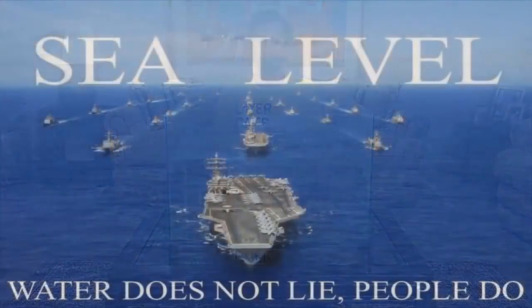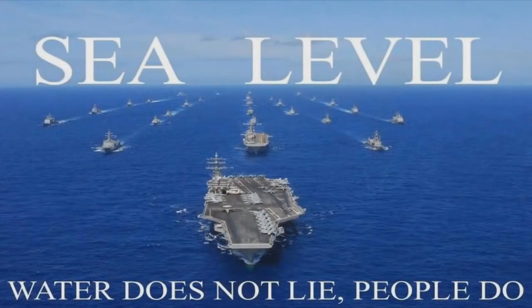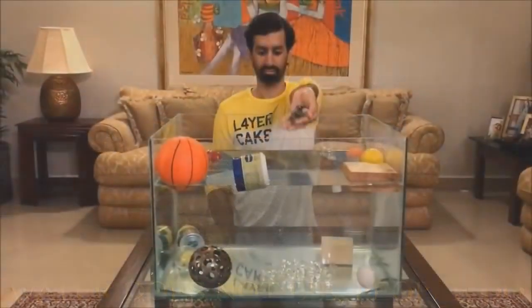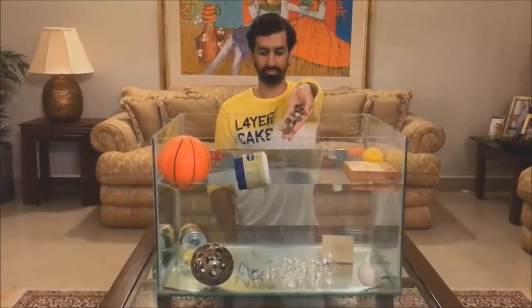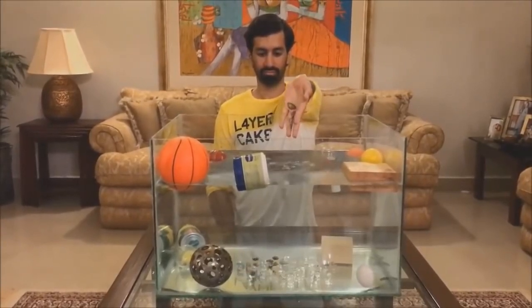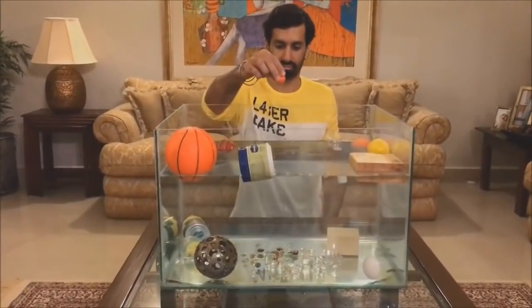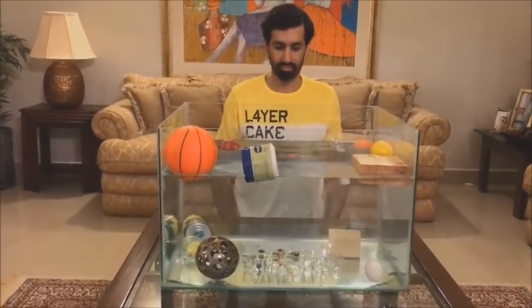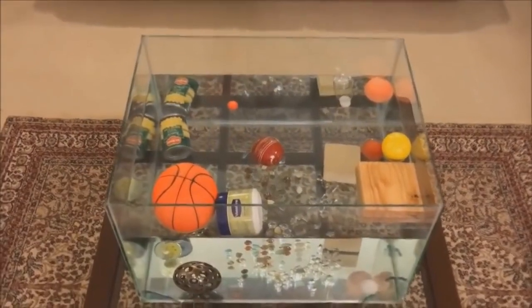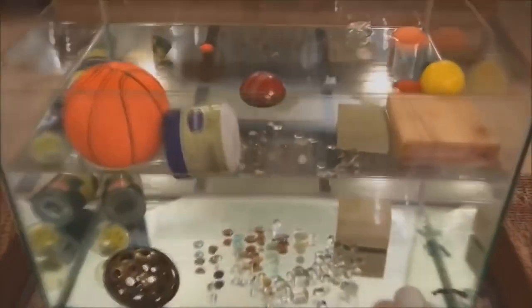This is why a tiny pebble sinks to the bottom of the ocean, but gigantic cruise ships and aircraft carriers stay afloat on the surface, because even though a pebble is so small, its mass relative to its volume, its density, is more than water, so it sinks. And even though a cruise ship is so large, its mass relative to its volume is less than water, so it floats.